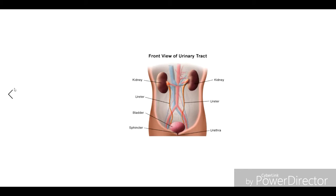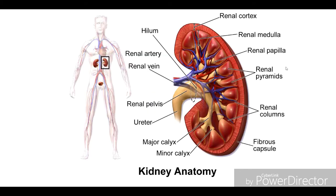Looking at the longitudinal section of the kidney, the outer reddish area is called the cortex. The inner lighter red area is the middle region called the medulla. The medulla is divided into 15 to 16 cone-shaped structures called renal pyramids. Each renal pyramid ends in a renal papilla. The cortex extends between the pyramids and is called the columns of Bertin.